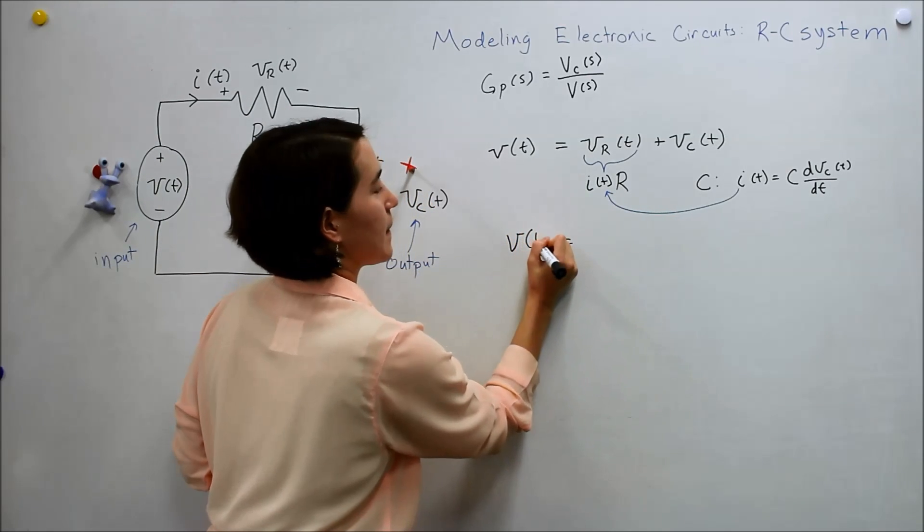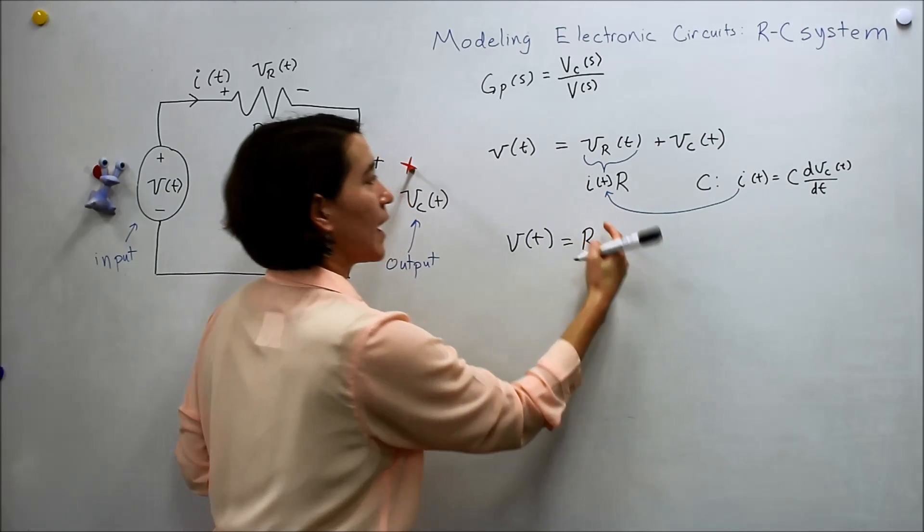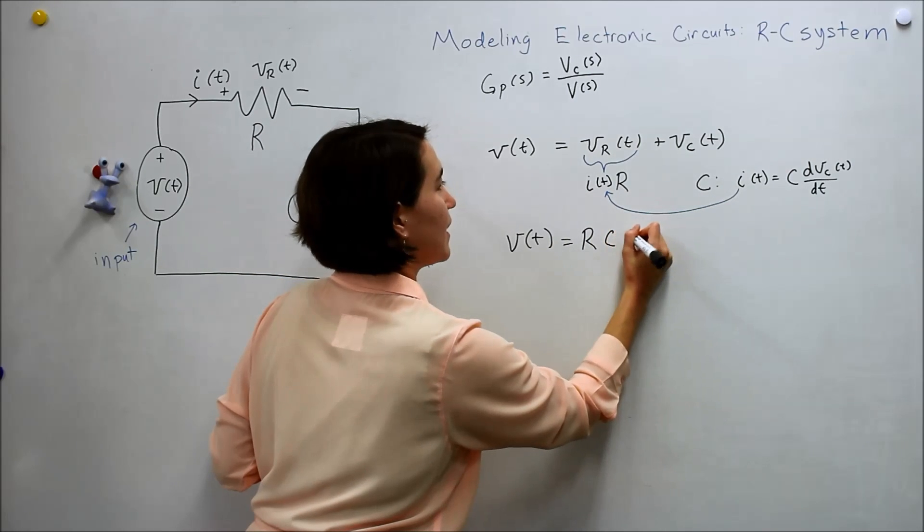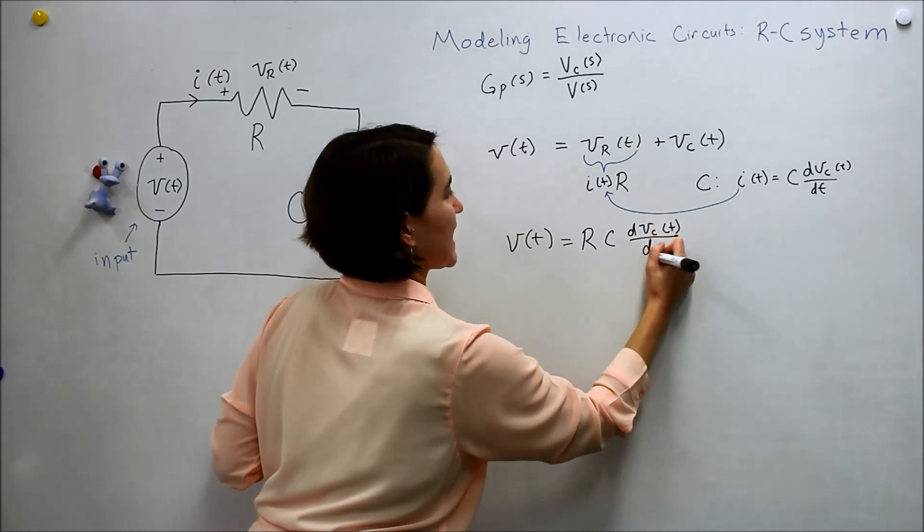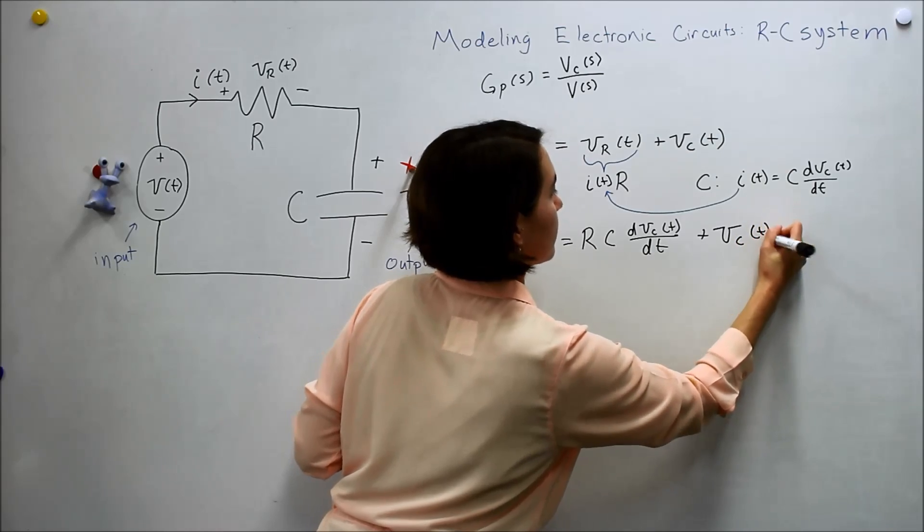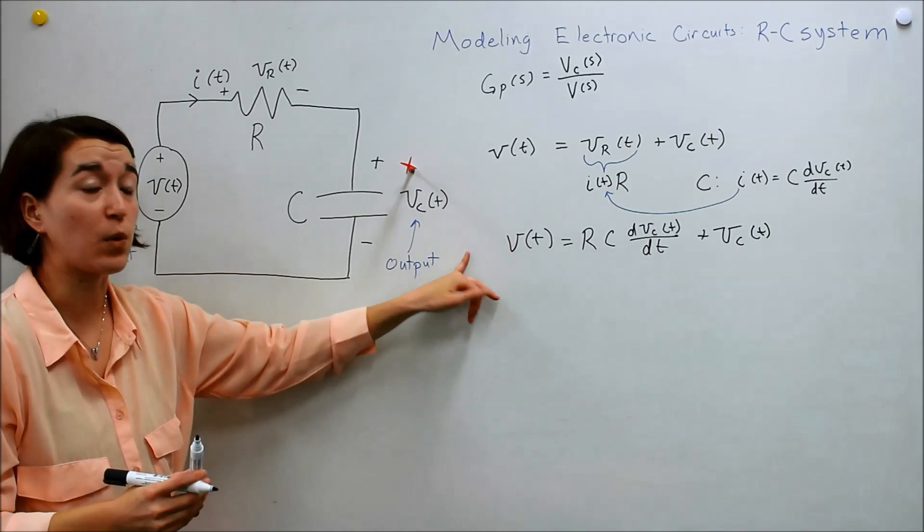So v of t stands the same. And now we have r times the current, which is c dv_c/dt, and the capacitor voltage. Okay, great. So now we have an expression in terms of only the things that we want. And now we can take the Laplace.